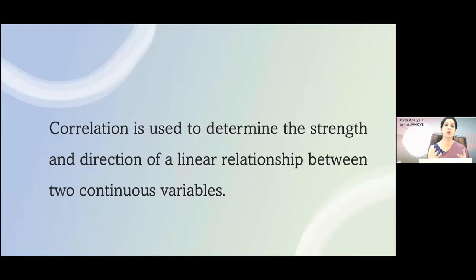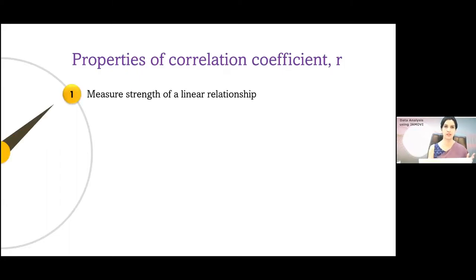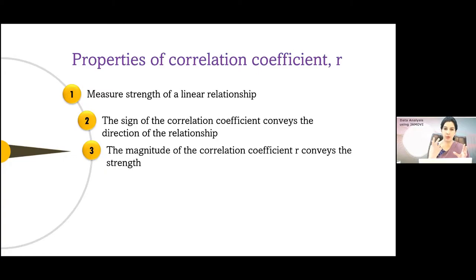When talking about the properties of the correlation coefficient r, when you apply the bivariate correlation command you get a statistic r, also known as the coefficient of correlation. It measures the strength of the relationship. The sign of the correlation coefficient tells you the direction — what happens to the dependent variable when the independent variable changes. The magnitude of r conveys the strength of association, ranging from 0 to 1 with a sign.